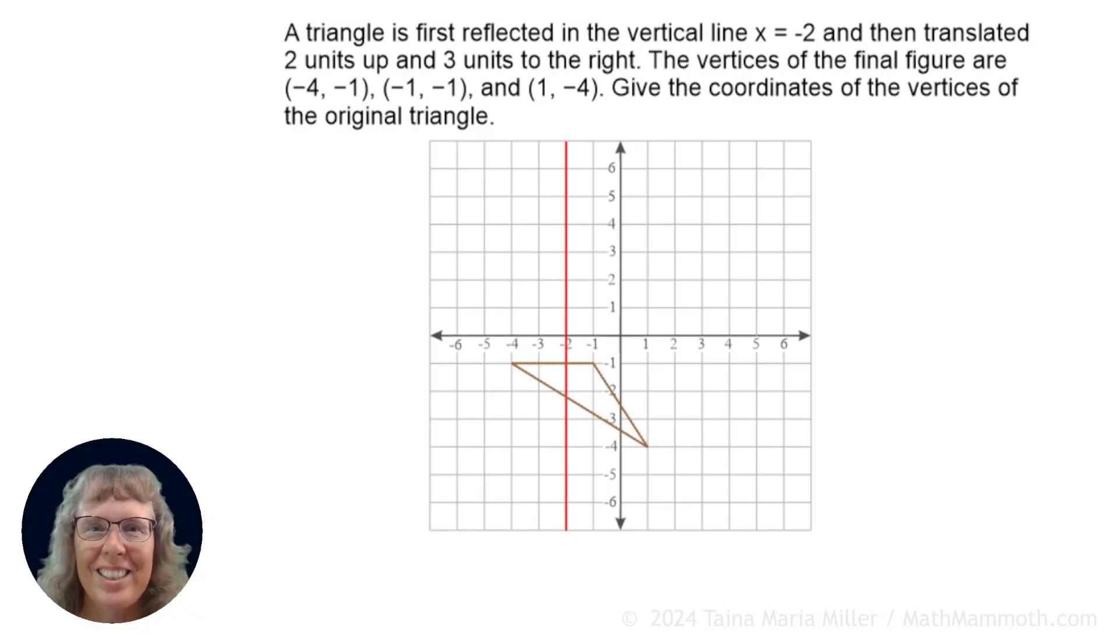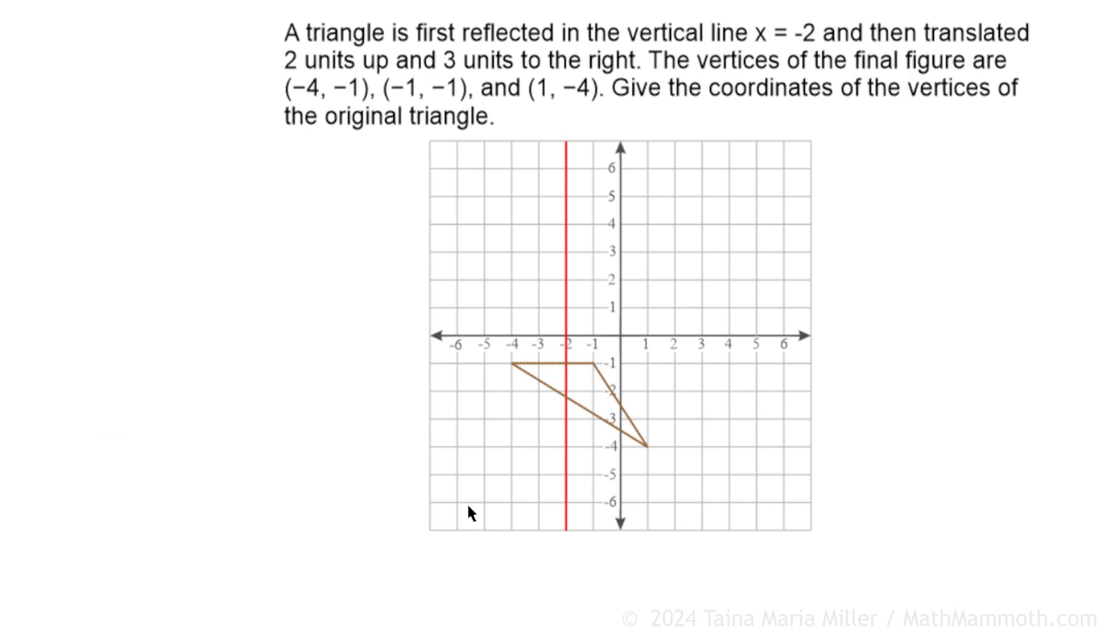Okay, in this question we have a triangle that has been transformed in two different ways. There's been a sequence of transformations take place. And we see it there in its final location and our task is to find the original coordinates of the vertices of the triangle before those two transformations. So, a triangle is first reflected in the vertical line x equals negative 2. That line is already drawn there. And then translated two units up and three units to the right.